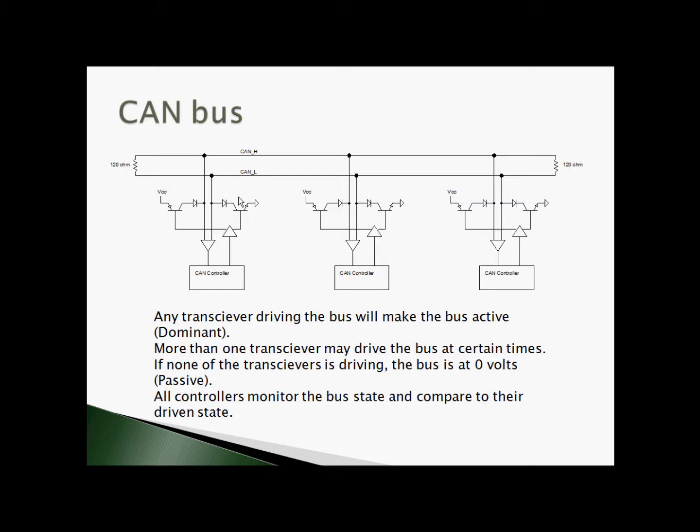The dominant state will cause the bus to have a voltage across it. If all nodes are in passive state, none of them will be driving the bus, and the termination resistors will cause it to go to zero volts, which is the passive state.